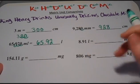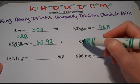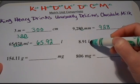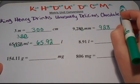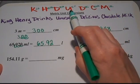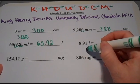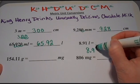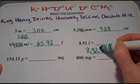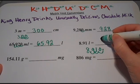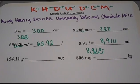This next example already has the decimal shown in the number. We're going to start at the unit — the liter — and move over to milli, so we're moving to the right. I start at the unit and count one, two, three spaces to the right, moving the decimal three spaces to the right, giving me 8,910 milliliters.